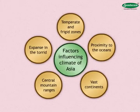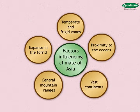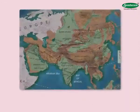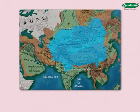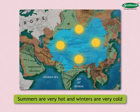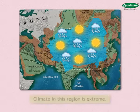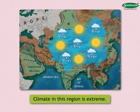Now we shall study the climate of Asia. Its expanse in the torrid, temperate, and frigid zones, proximity to the oceans, vast continent, and the central mountain ranges have all influenced the climate of Asia. Hence, there is a lot of diversity in the climate of this continent. As the interior of the continent is far away from the sea, summers are very hot and winters are very cold, meaning the climate in this region is extreme.